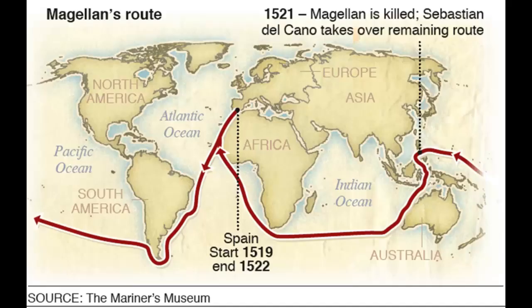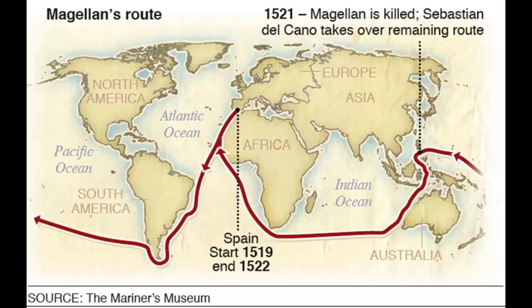Magellan took off from Spain, sailed around the southern point of South America — now called the Straits of Magellan — got into the Philippines where he was killed in battle. His crew then sailed south, around the Cape of Good Hope, back up the coast of Africa, and home to Spain. He didn't make it, but his crew did — it took about three years. Those survivors were held as heroes, and it actually proved that the world was round, since before that many people thought the world was flat.